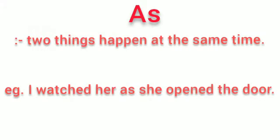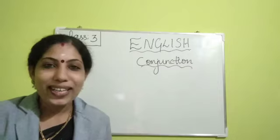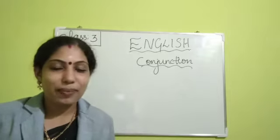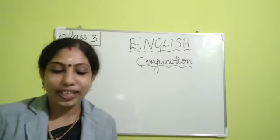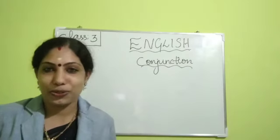The next conjunction is 'as.' We use 'as' when we want to say two things that happen at the same time or same period of time. For example: I watched her as she opened the door. Now, dear children, let's do some textual exercises. Open your textbook to page number 52.